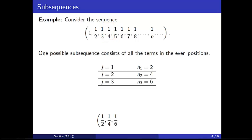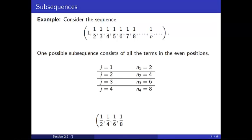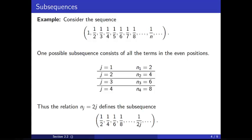Continuing, for the third term in the subsequence we want the sixth term in the original, so we set n_3=6, and 1/6 is the third term. For the fourth term we choose the eighth term in the original, setting n_4=8, so 1/8 is the fourth term. Thus the relationship n_j = 2j defines the subsequence 1/2, 1/4, 1/6, 1/8, and so on.